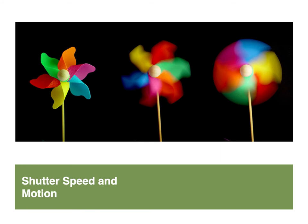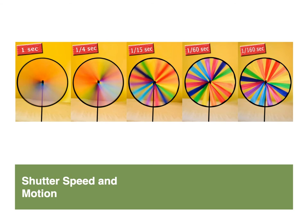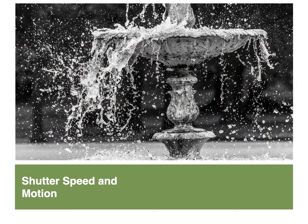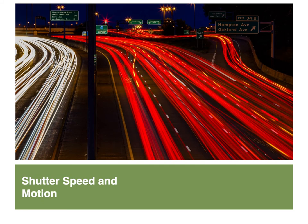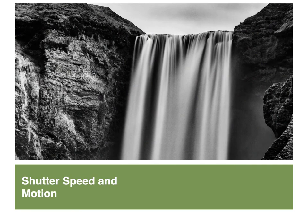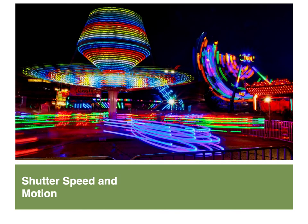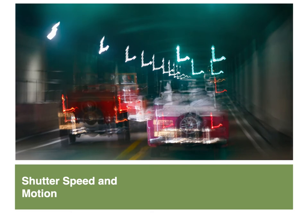The choice of shutter speed affects motion in a photograph—how still or how blurred that motion will be. Shutter speed can be very fast and freeze motion like water droplets in a fountain or flames in a bonfire. It can be very slow and stretch or smear motion like taillights or a waterfall. We tend to notice motion most at the extremes of very frozen or very fluid.